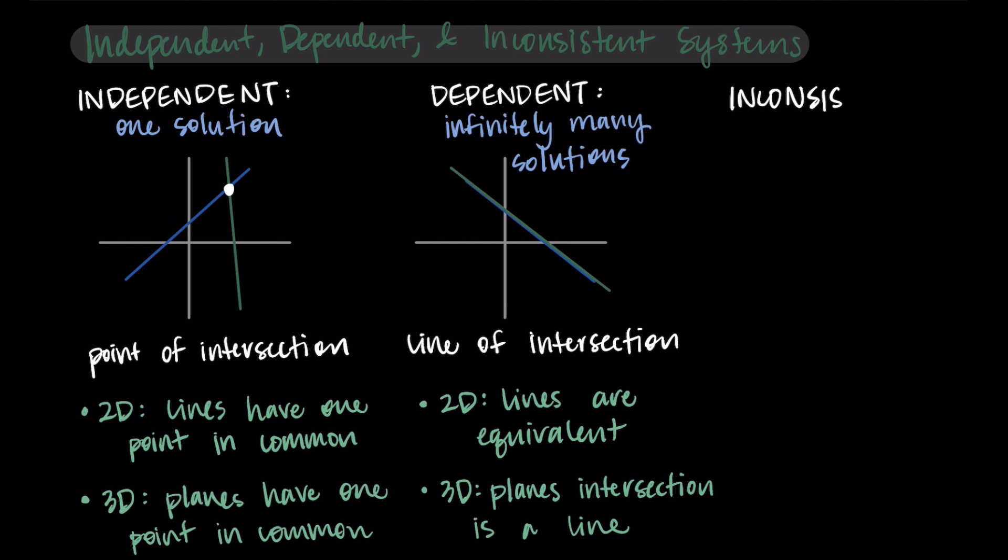Then lastly, we have inconsistent systems. These systems have no solutions. So I like to think of this as two lines that we were given, but they're totally parallel. They never intersect. And so there's no solution to this system. In this case, there would be no common intersection. So there's just no intersection between them.